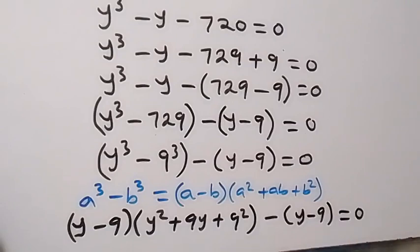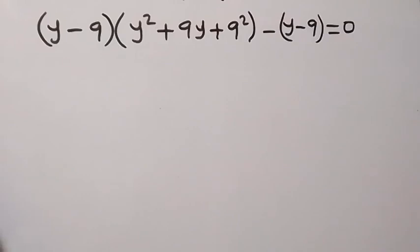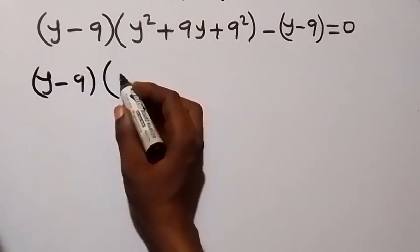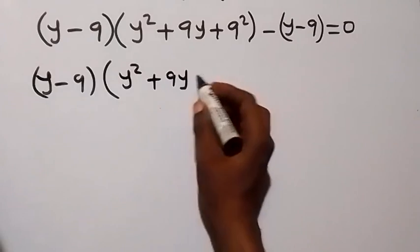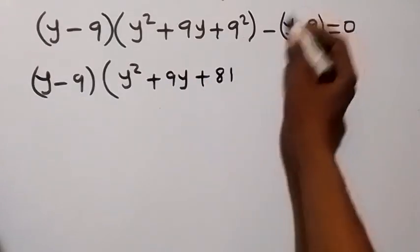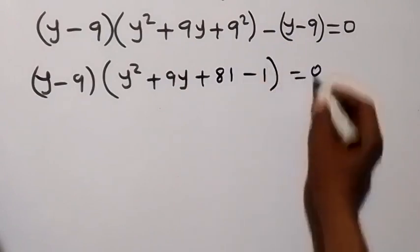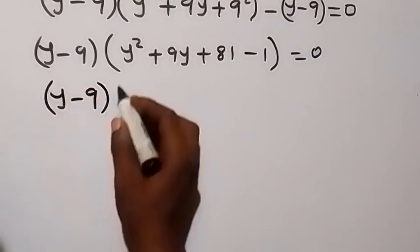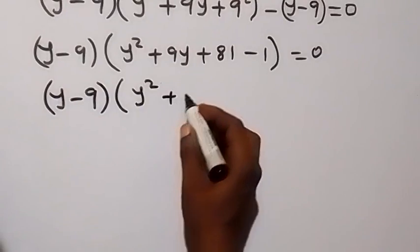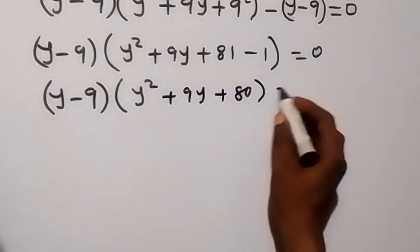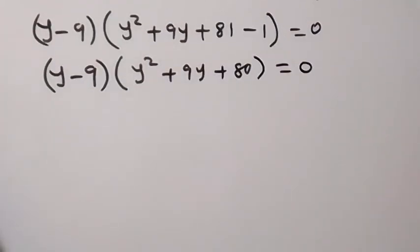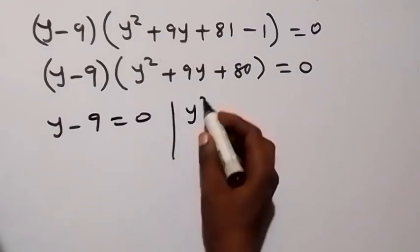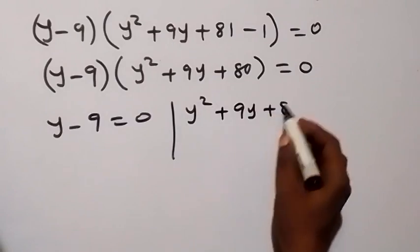We now have two possible cases. From (y-9) = 0 we get y = 9. From y² + 9y + 80 = 0, we check the discriminant: b² - 4ac = 9² - 4(1)(80) = 81 - 320, which is less than 0, so there is no real solution from this case.